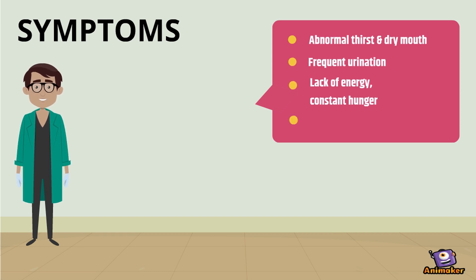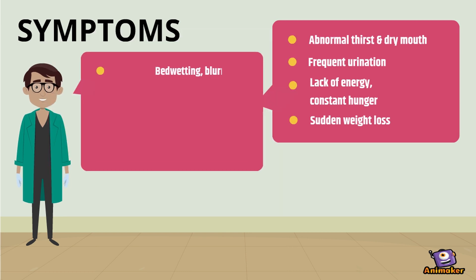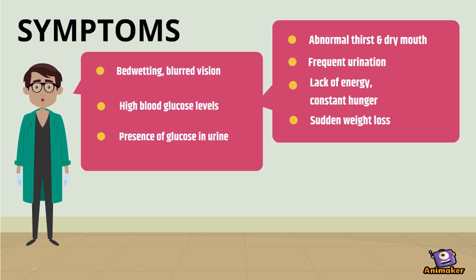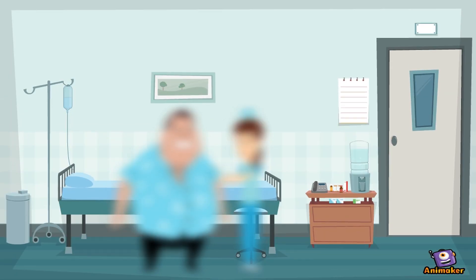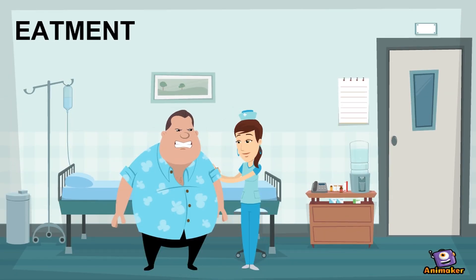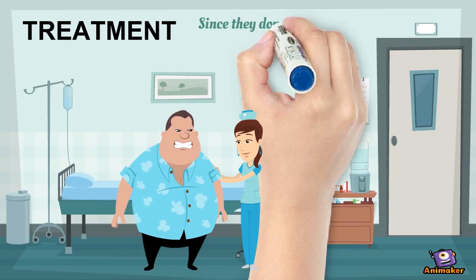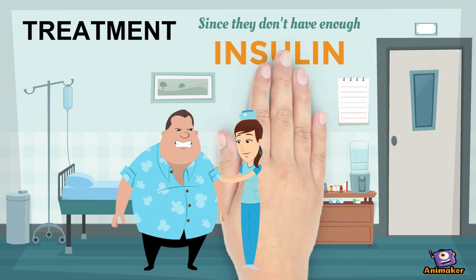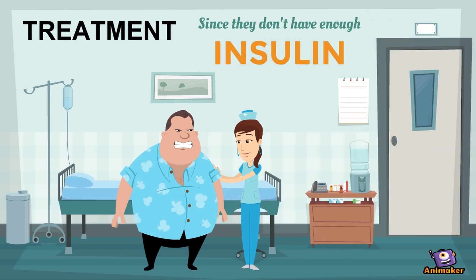Additional symptoms include lack of energy, constant hunger, sudden weight loss, bed wetting, blurred vision, high blood glucose levels, and presence of glucose in the urine. For treatment, since they do not have enough insulin, they will need insulin injections every day in order to control the levels of glucose in their blood.